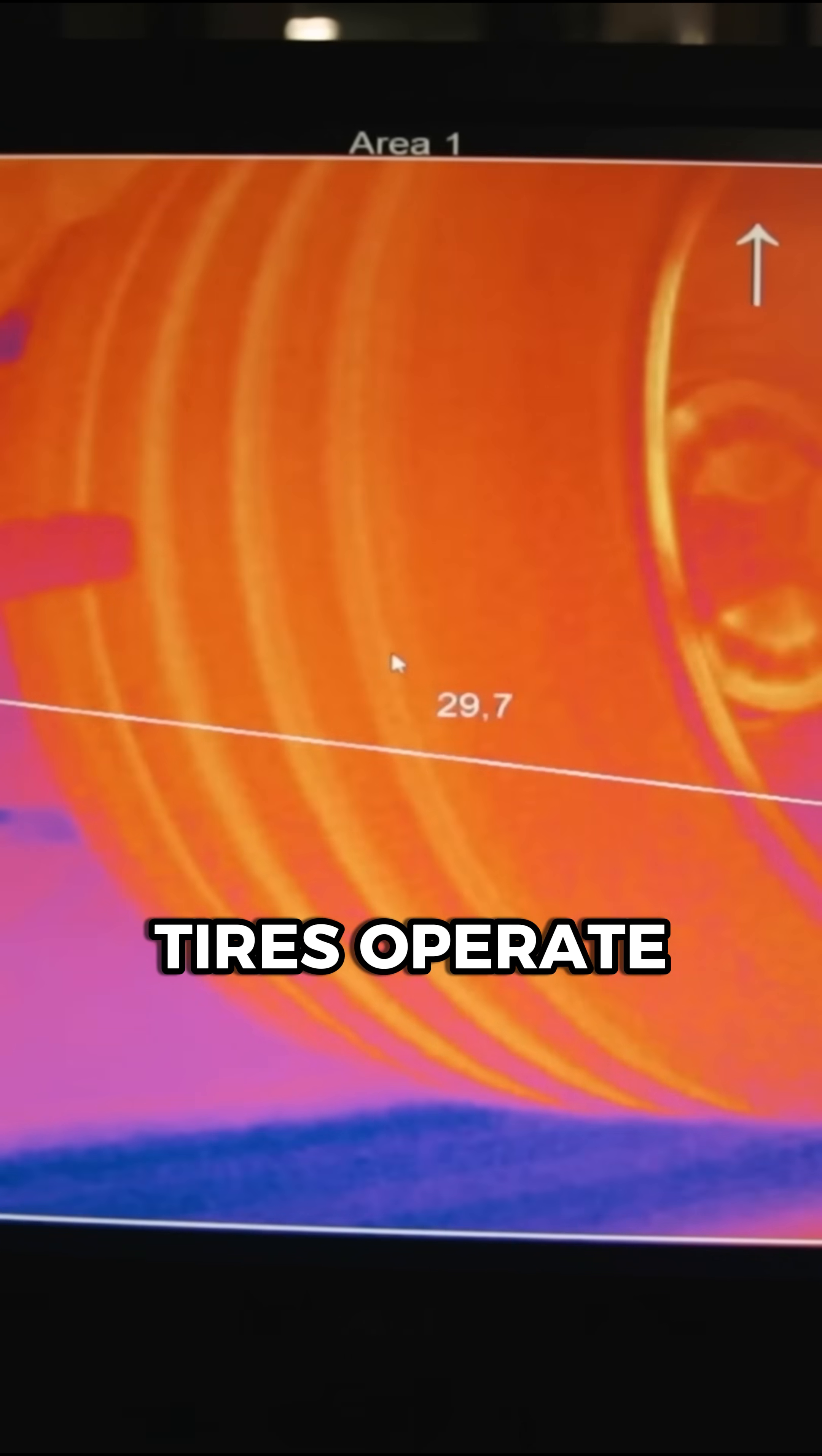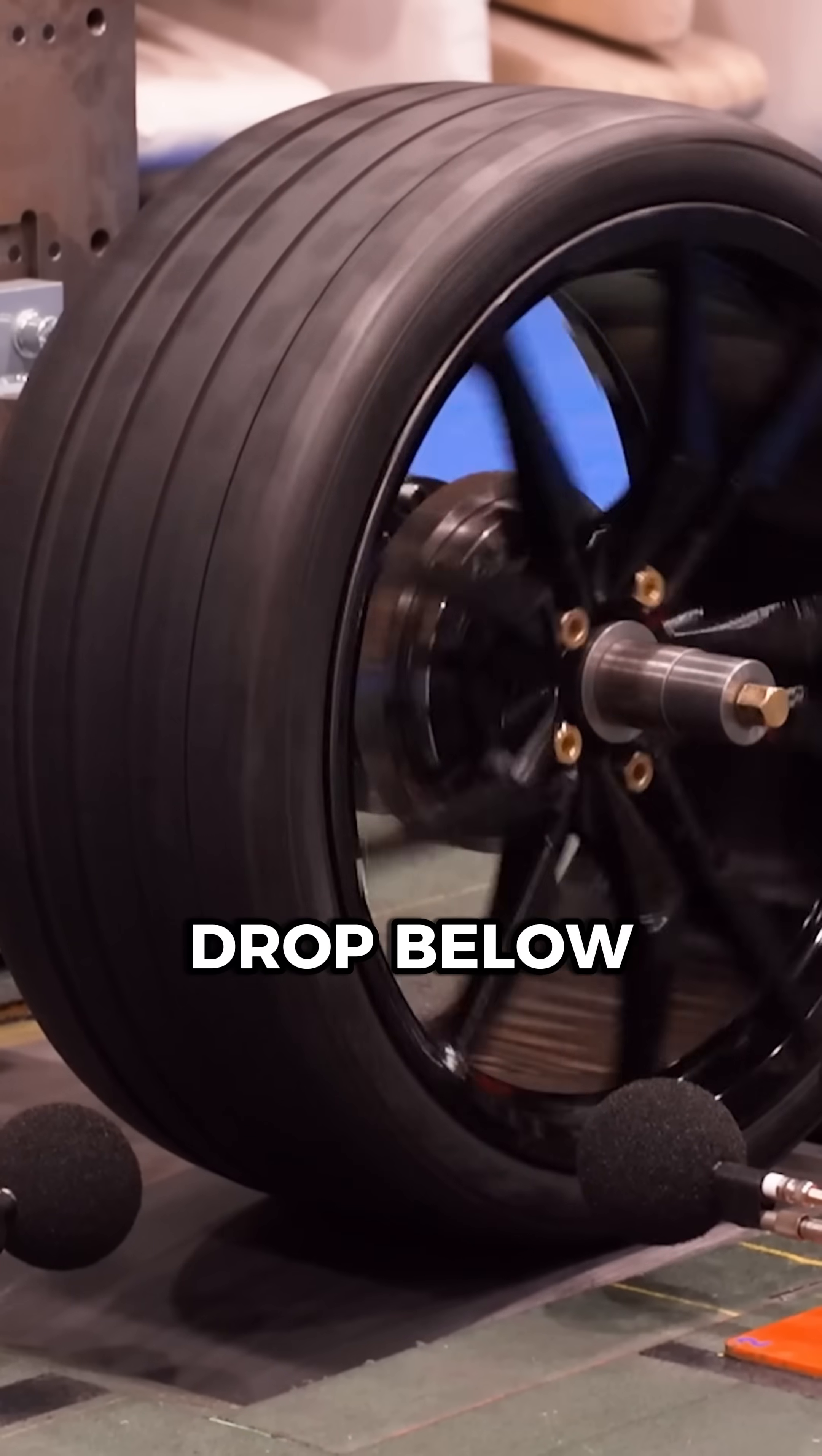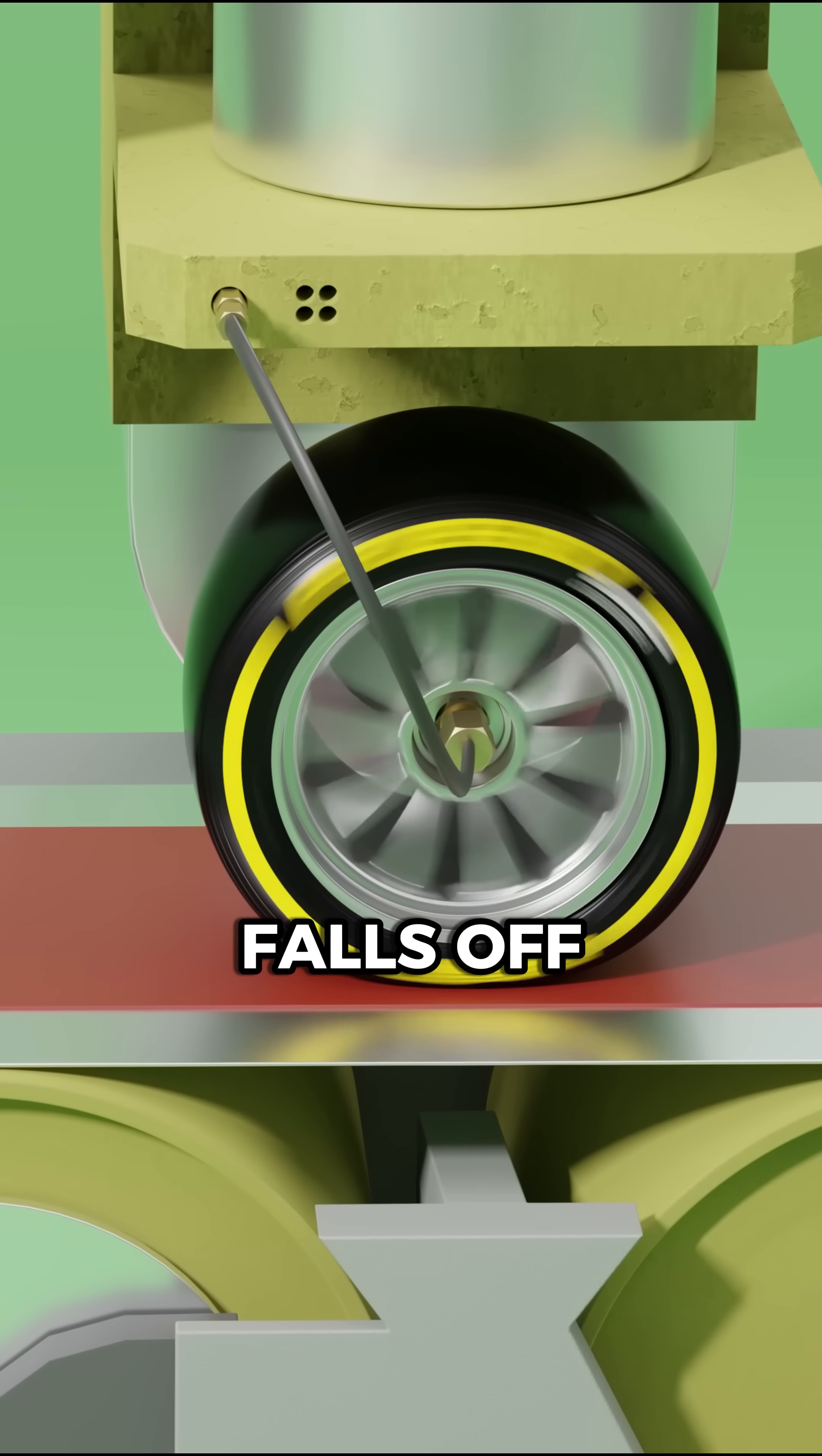Most racing tires operate within a tight temperature window. Drop below or go above, and grip falls off instantly.